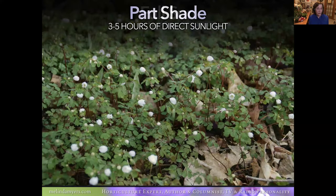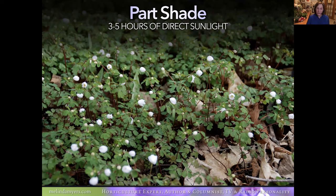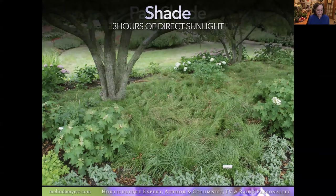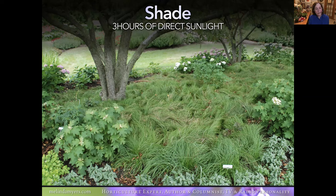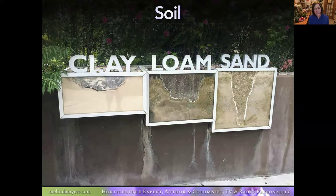An east-facing location is perfect for part shade, and dappled shade under a tree with indirect light all day also qualifies. For shade, two to three hours of direct sunlight. You can judge light levels by what's already growing well — plants that require the same sunlight are good additions to those gardens. Soil is another factor. When we talk about planting your rain garden, we discuss preparing the bed, which for most of us includes adding organic matter because most of us don't have ideal soil.